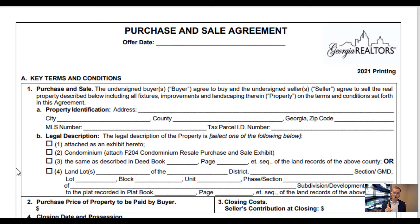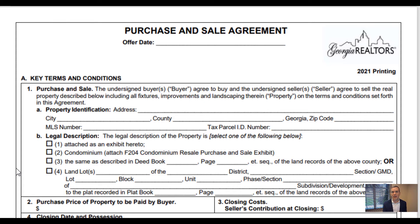Let's look at the four options. Option number one: attach as an exhibit. A lot of people are using that — they're going to the warranty deed or the quitclaim deed, pulling the legal description and attaching it as an exhibit. That is a wonderful option. We'll see why I may not want you doing that if you're pressed for time. Option number two is condominium — there's another form F-204 for the condominium resale purchase and sale, which basically acts as an exhibit. Option number three: the same as described in deed book blank, page blank of the land records of the above county. I love that option when you are pressed for time, and we're going to go over that as our main suggestion.